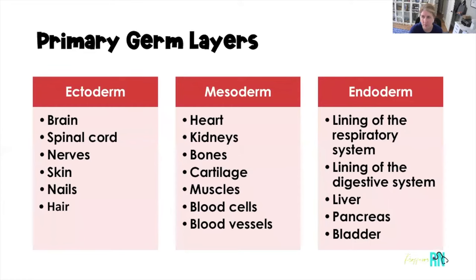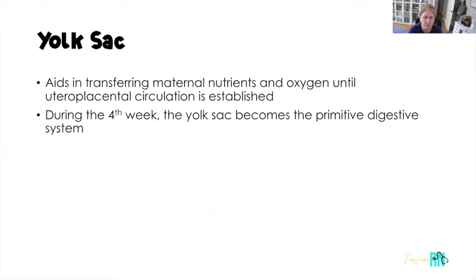Here are the three primary germ layers again: ectoderm, mesoderm, and endoderm, and the structures that arise from each. Now let's talk about some important components of conception that are vital to the survival of the pregnancy. The first one is the yolk sac.